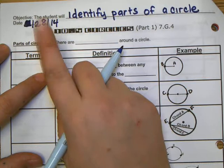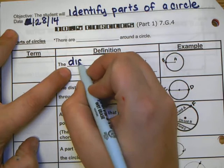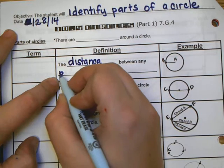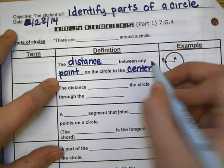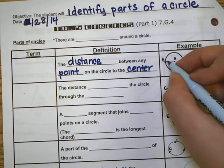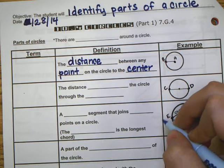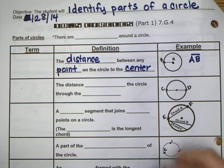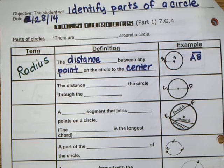The first thing we're going to talk about is the distance between any point on the circle and the center. Go ahead and ask yourself: do you know what it's called? This distance from a point on the circle all the way to the middle — the center of the circle. So in other words, what is the length AB called? If you said radius, you are correct. This is the radius.